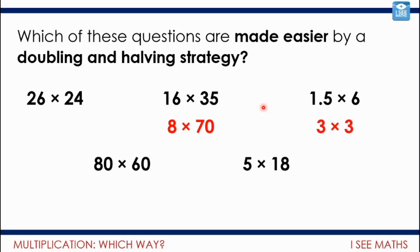So, another one. 1.5 multiplied by 6. Well, it's just the same as 3 multiplied by 3. Double the 1.5 and halve the 6. I think I find that easier. The last example I chose was actually 5 multiplied by 18. Because double the 5, it's 10. And 10 multiplied by 9. So, in some instances, a really useful strategy to have.